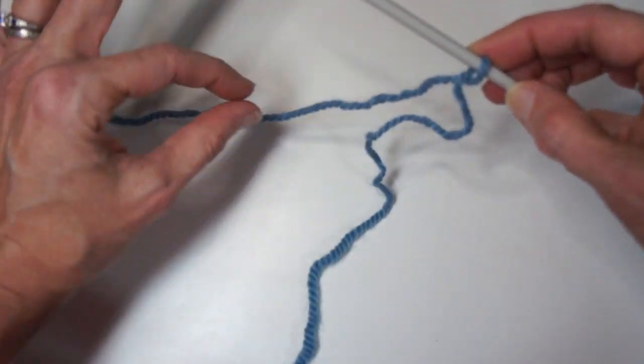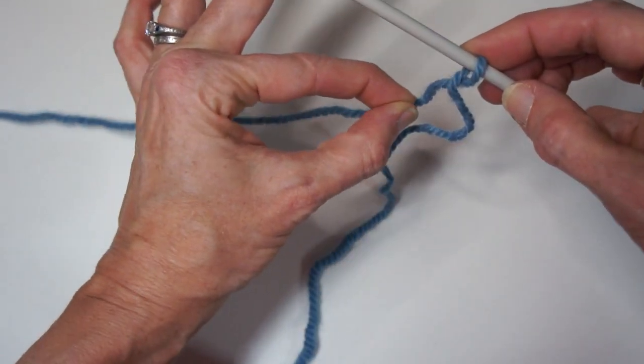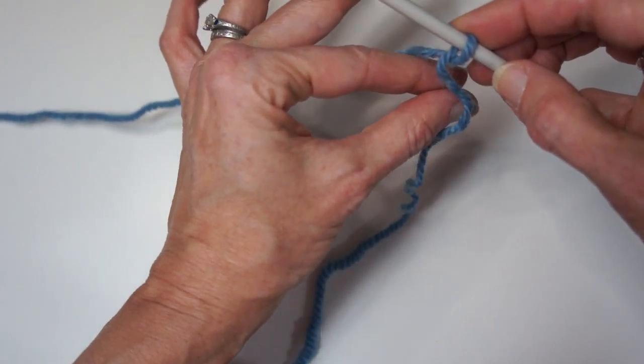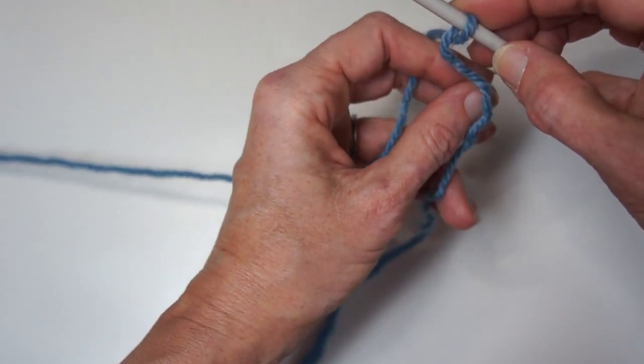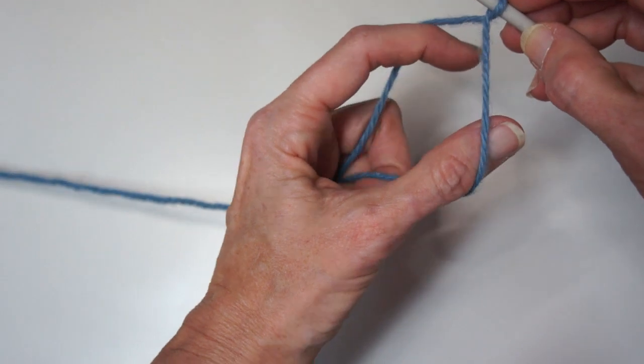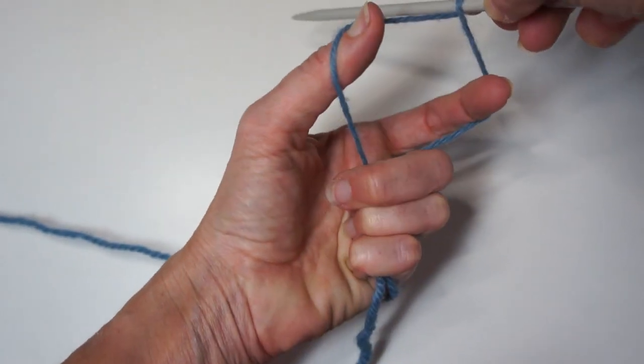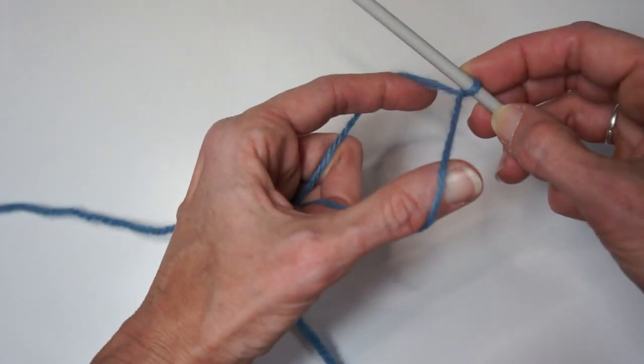So again, thumb and finger monster just over the tip of the thumb and finger. Take the other three fingers, grab the yarn, and you have a diamond position.